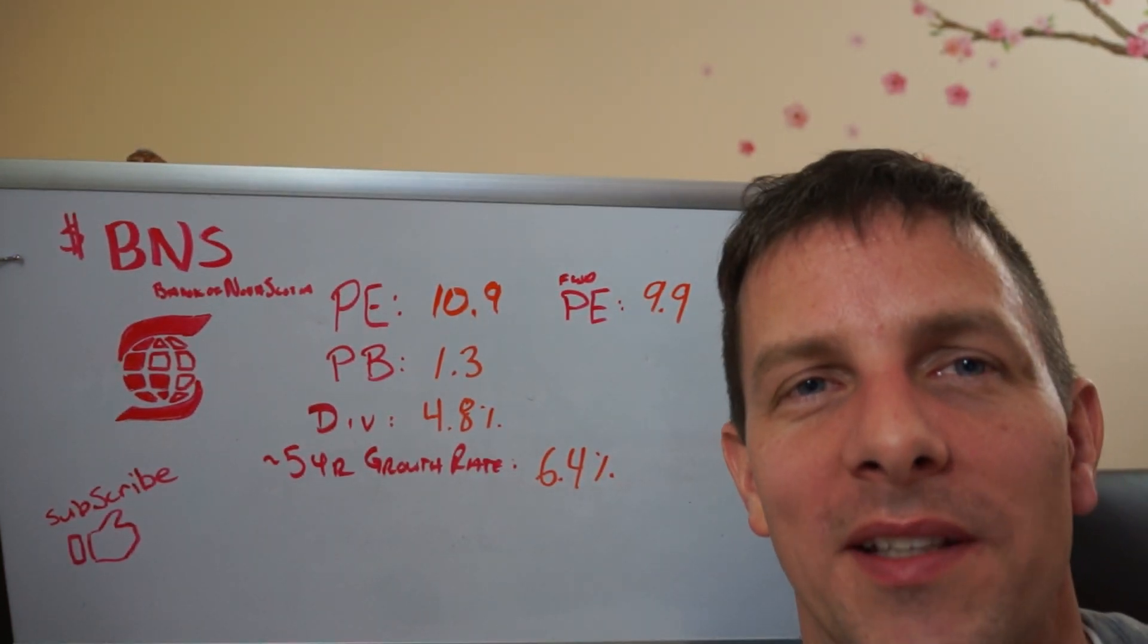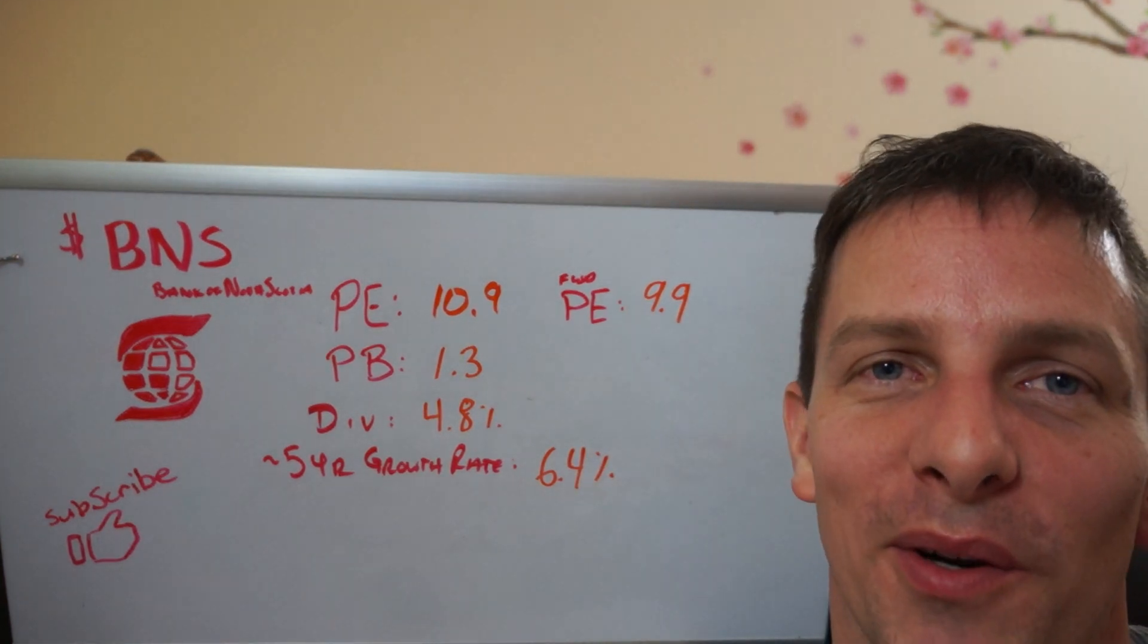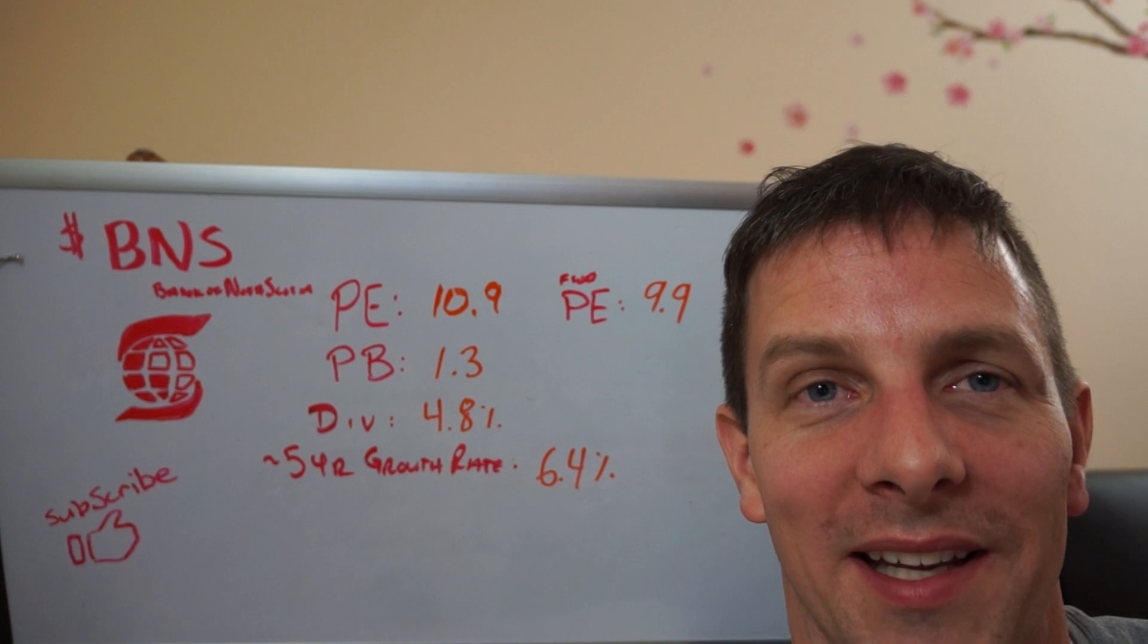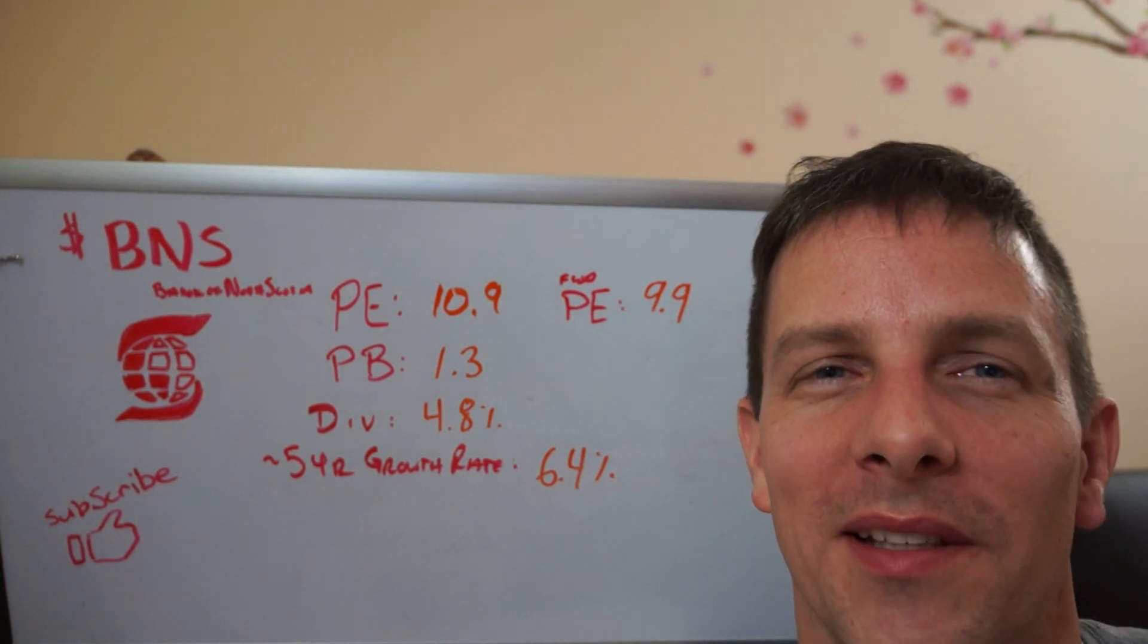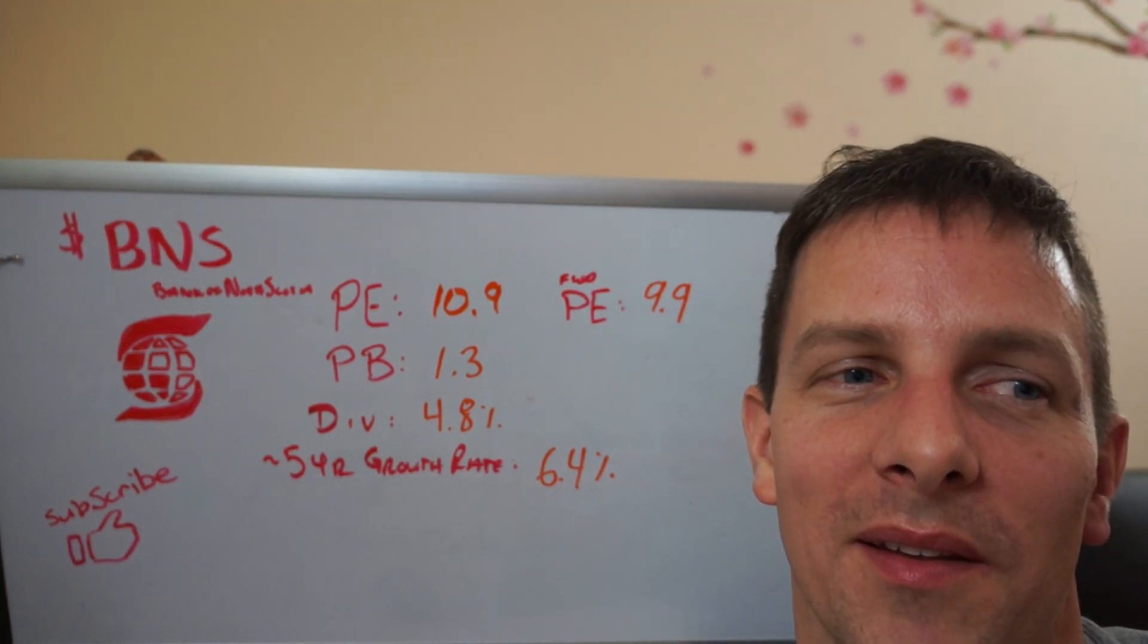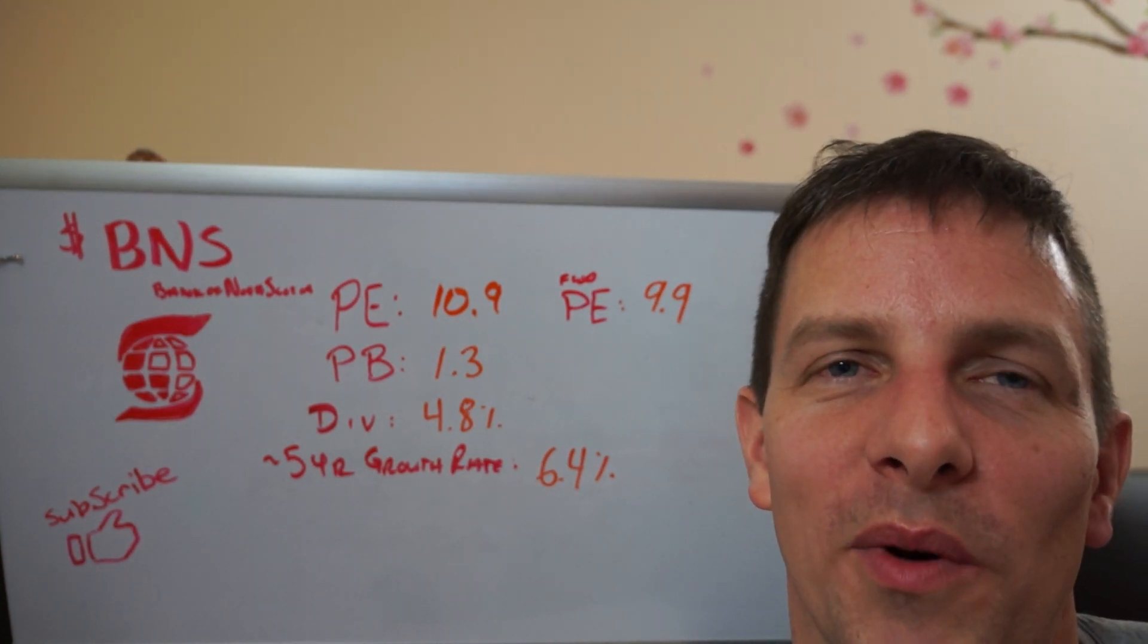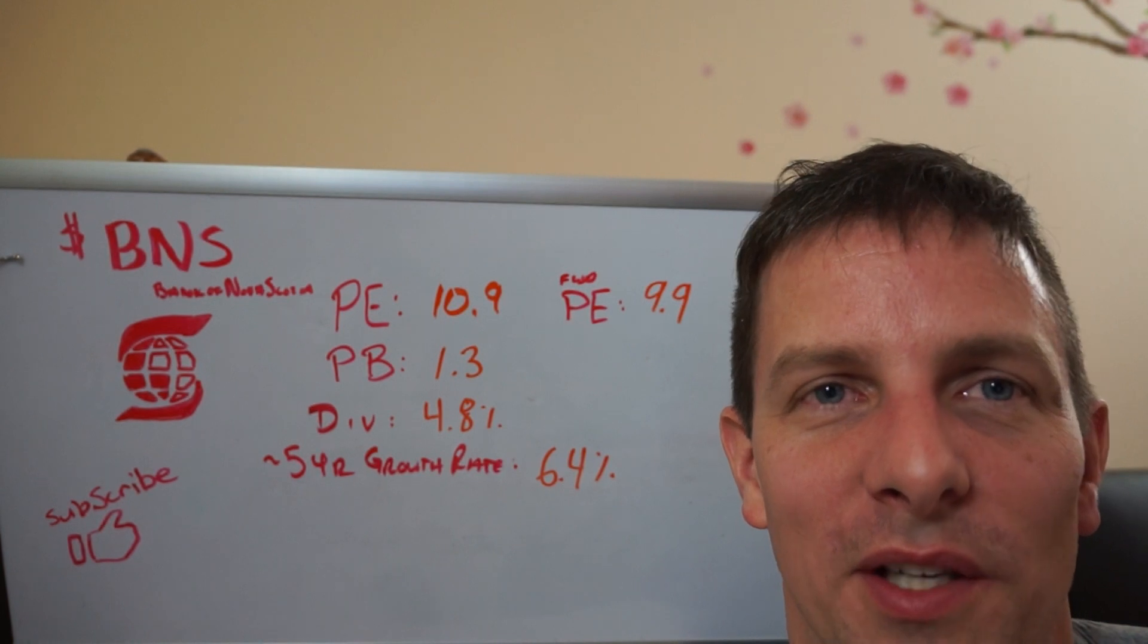Probably one of the worst things I see about this is its five year growth rate at 6.4%. Now most banks in Canada are like around 9%. So this is the lowest growth in any bank for the major five banks in Canada. So that's kind of the one downside I see for the Bank of Nova Scotia.